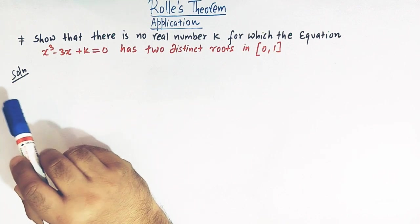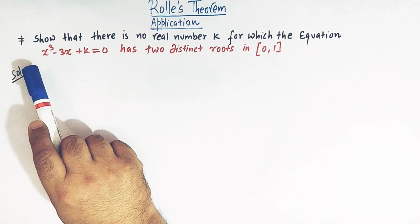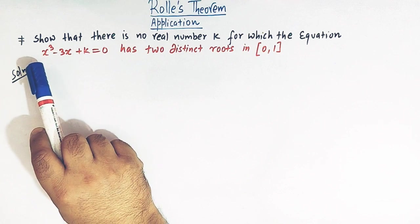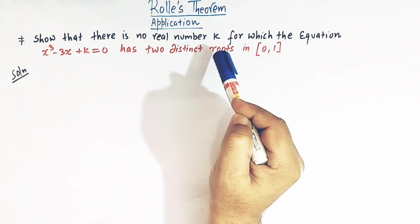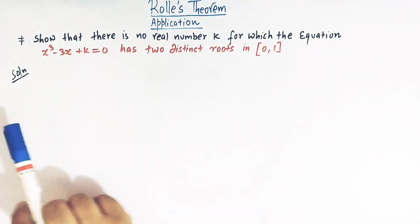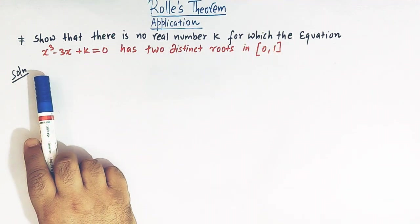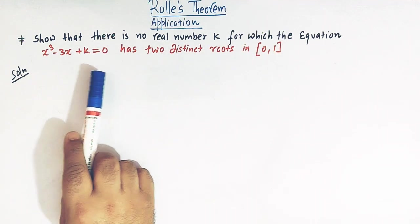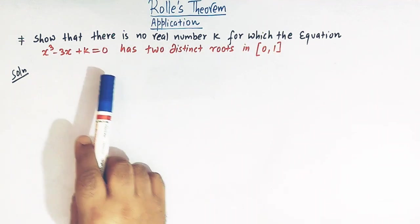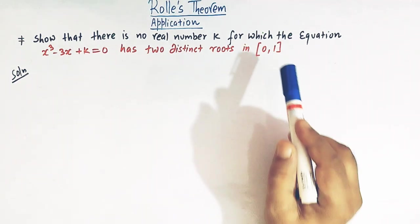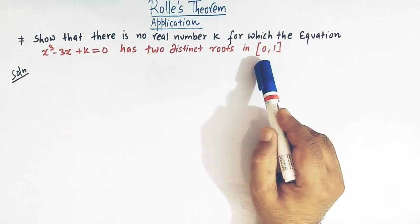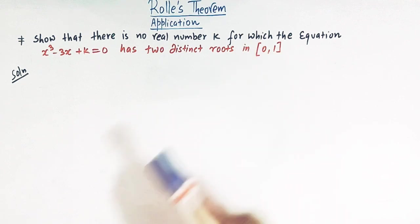The problem requires us to show that there is no real number k for which the equation x³ - 3x + k = 0 has two distinct roots in the closed interval [0, 1].